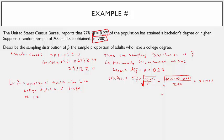Using the TI-84: 2nd function, square root of 0.27 times (1 minus 0.27), close parentheses, divided by 200. Going out to four decimal places, sigma p-hat equals 0.0314. So we've described the distribution: normally distributed, with the mean and standard deviation established.